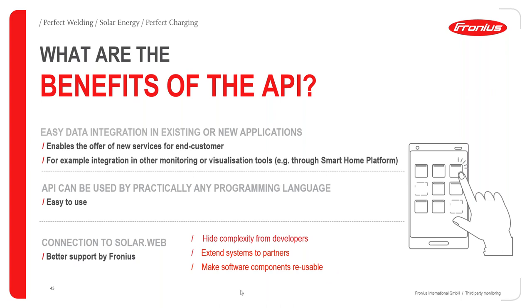The Fronius SolarWeb API also hides complexity as a developer — you don't need to worry about how SolarWeb itself is coded. You use a simple API code to query data from the SolarWeb server. It also allows you to extend systems to partners, offer different services to customers, integrate into third-party monitoring platforms, and makes software components reusable across different devices or applications.